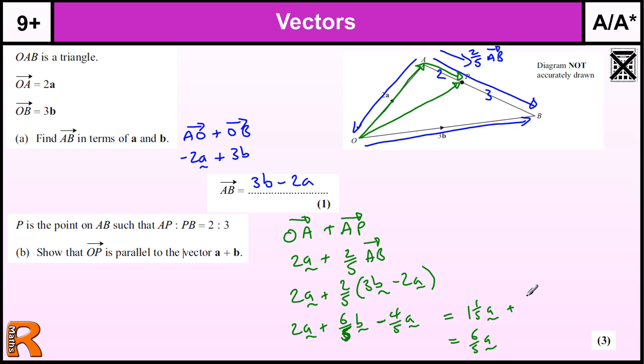And we've got plus 6 fifths of b. We could tidy that up and write it as 6 fifths of b. But we don't really need to do that. You'd get marks for any one of those answers.